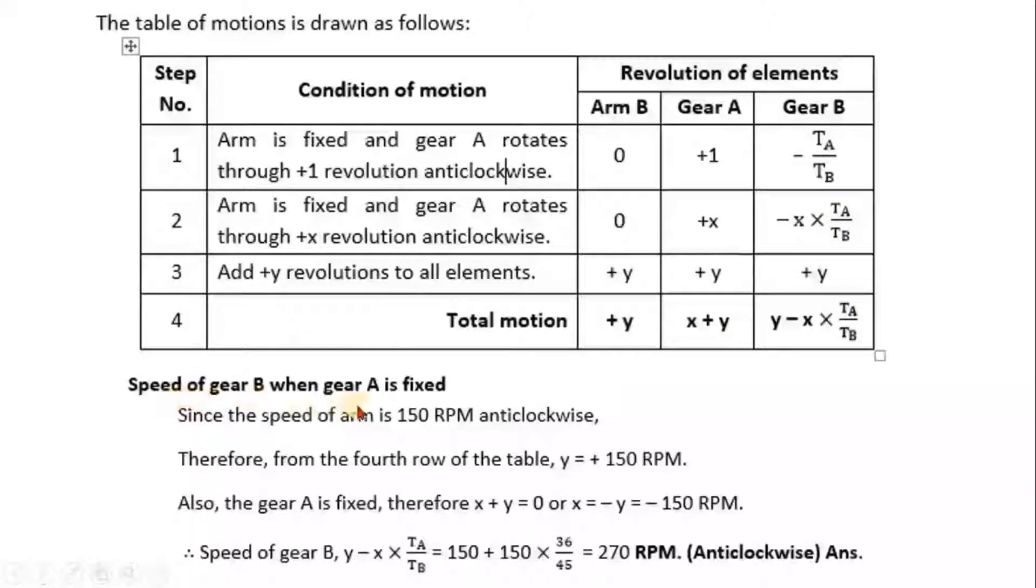So now speed of gear B when gear A is fixed. Since the speed of arm is 150 RPM anticlockwise, therefore from the fourth row of the table, y will be equal to 150 RPM.